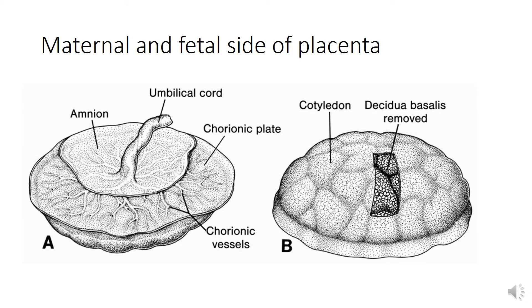After delivery of the fetus, rapid reduction in the size of the uterus leads to detachment of the placenta from the uterine wall. The uterus then undergoes a series of contractions, forcing the placenta and its associated membranes — the diffuse amnion and the smooth chorion — out of the uterus and through the vagina.